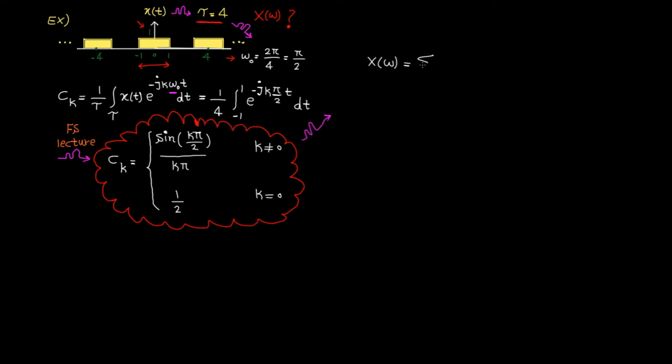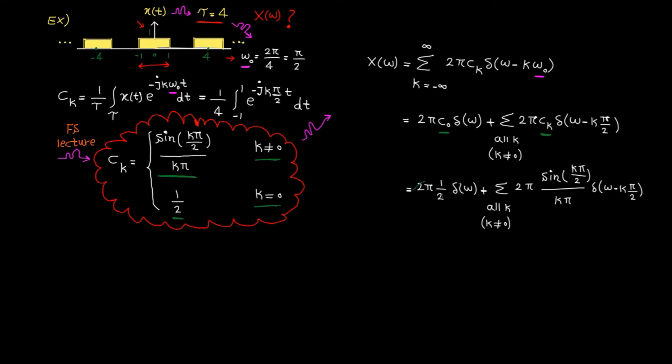The second step to find the Fourier transform is to replace ck here. As we have two expressions for k, not 0 and equal to 0, let's break the sigma into two terms. ω0 is π divided by 2. C0 is 1/2 and ck for all other k's is this. Let's replace them here. 2 is cancelled by 2 and π is cancelled by π. Here's the final answer.